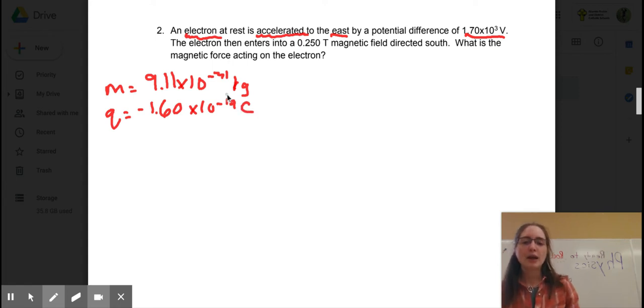And is accelerated to the east. That's going to come in handy when we draw our direction with a potential difference of 1.7 times 10 to the power of 3 volts. The electron is after that, it's going to enter a magnetic field that is going to have a value of 0.25 Tesla. And that is going to be directed south. What is the magnetic force acting on the electron?